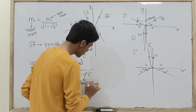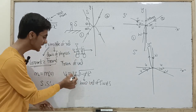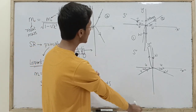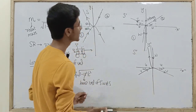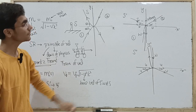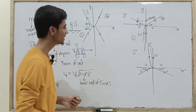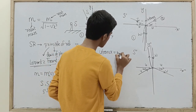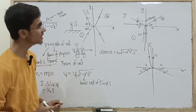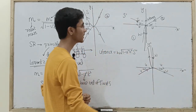If S prime moves with respect to S at velocity U, and the particle has vertical velocity V_y-dash in S prime, then in S its vertical velocity will be V_y-dash times the square root of 1 minus U² by C². Using this, U tan alpha equals W times the square root of 1 minus U² by C². The total momentum change must be zero.